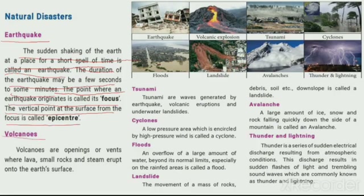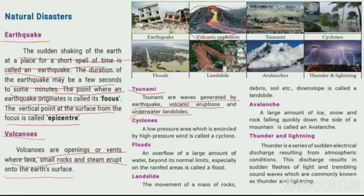Volcanoes are the openings or vents where lava, small rocks, and steam erupt onto the earth's surface. Tsunamis are waves generated by an earthquake, a volcanic eruption, or an underwater landslide.